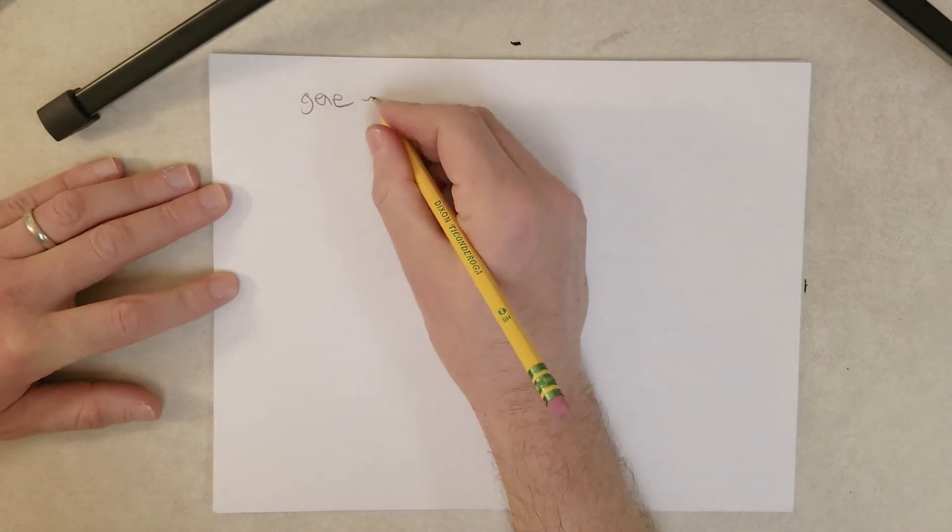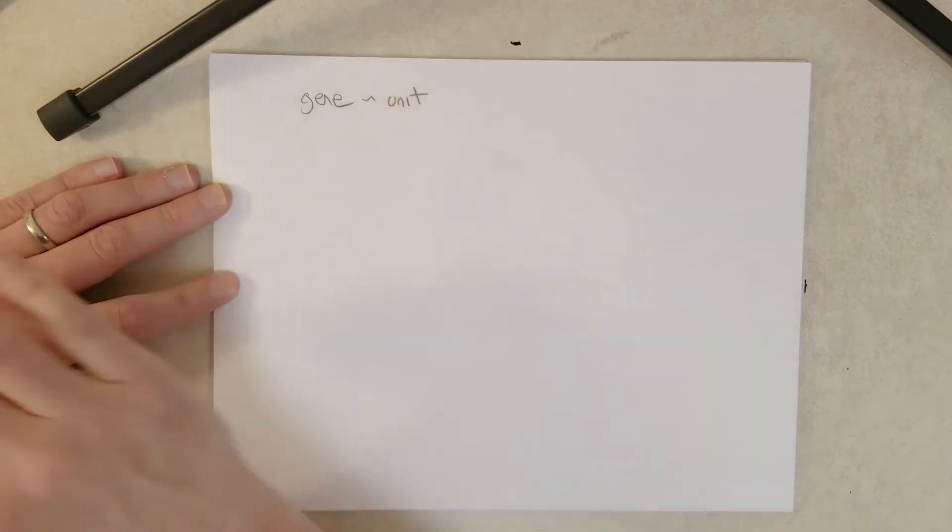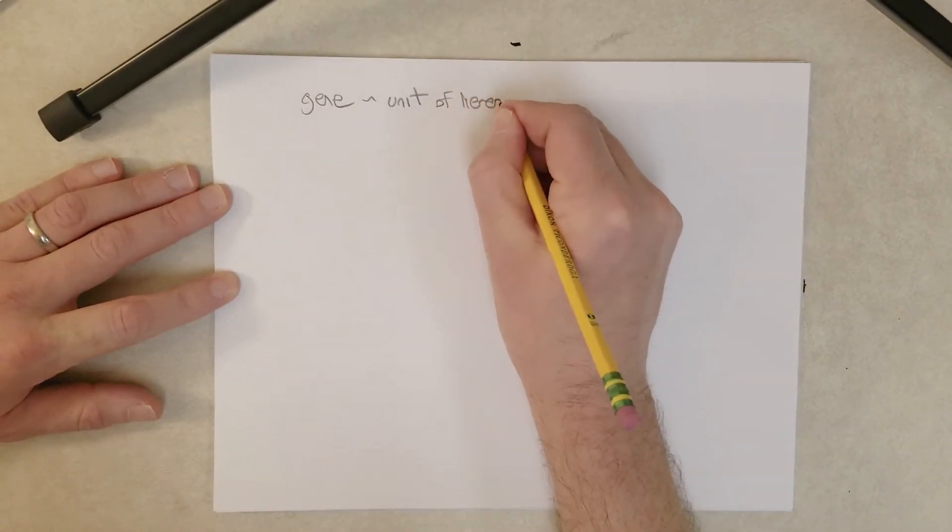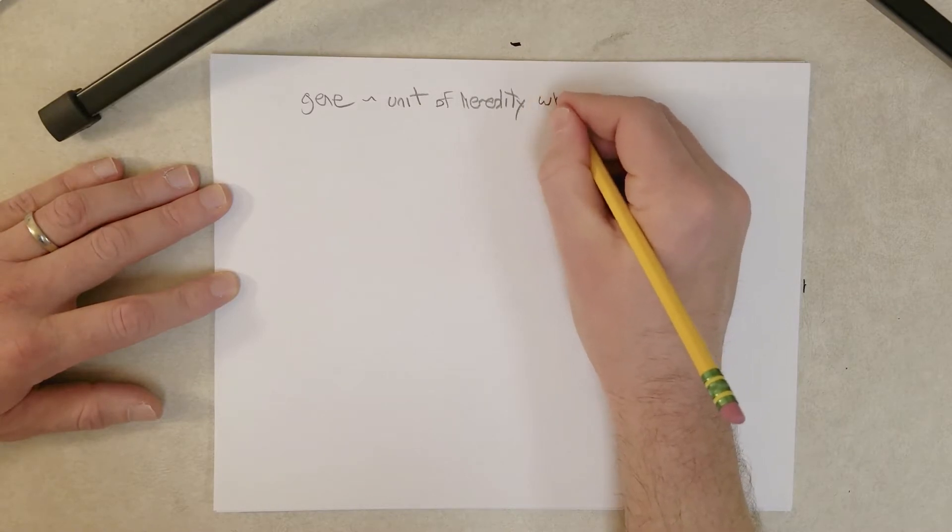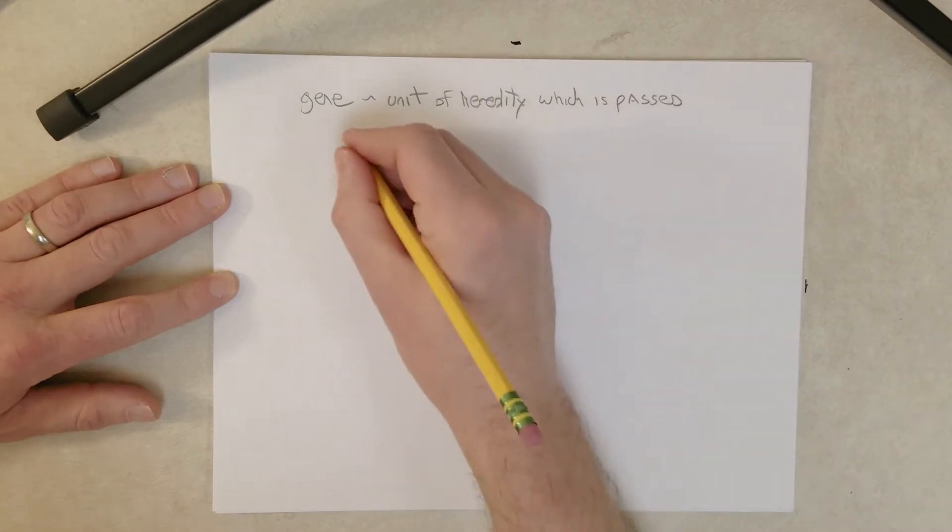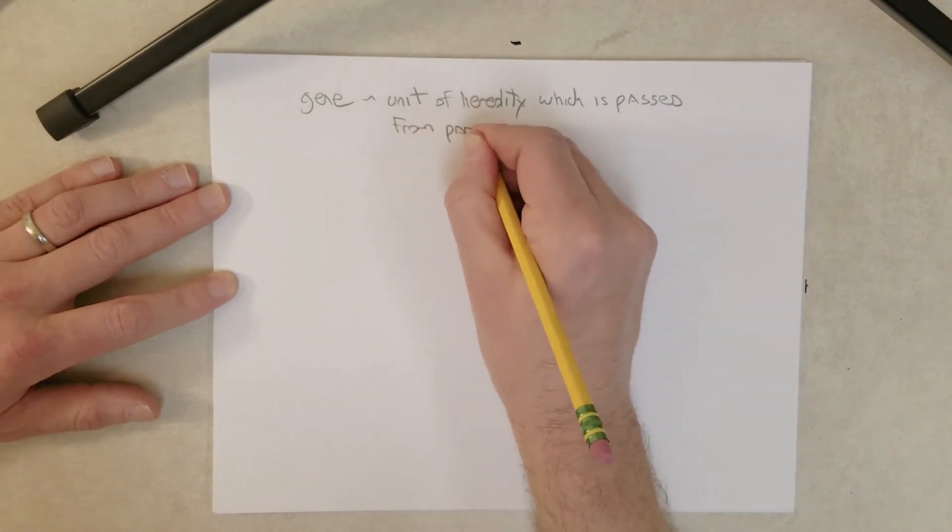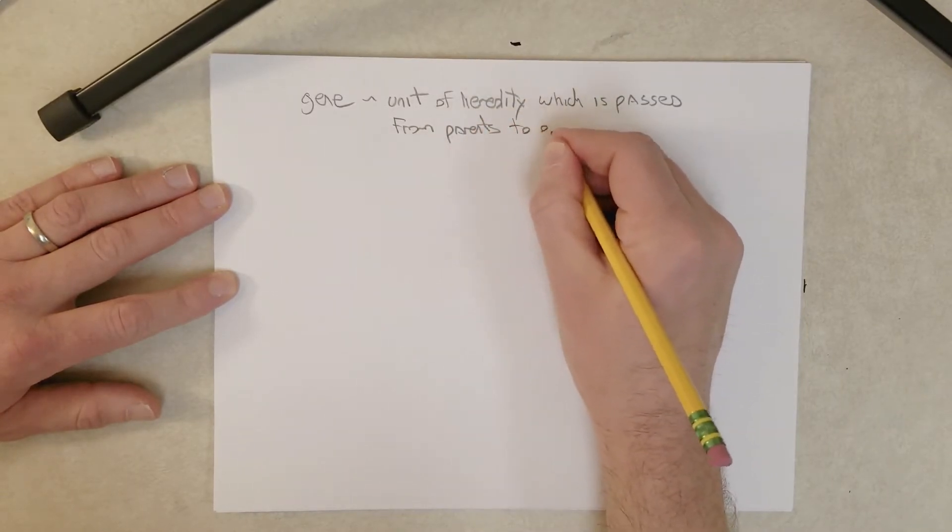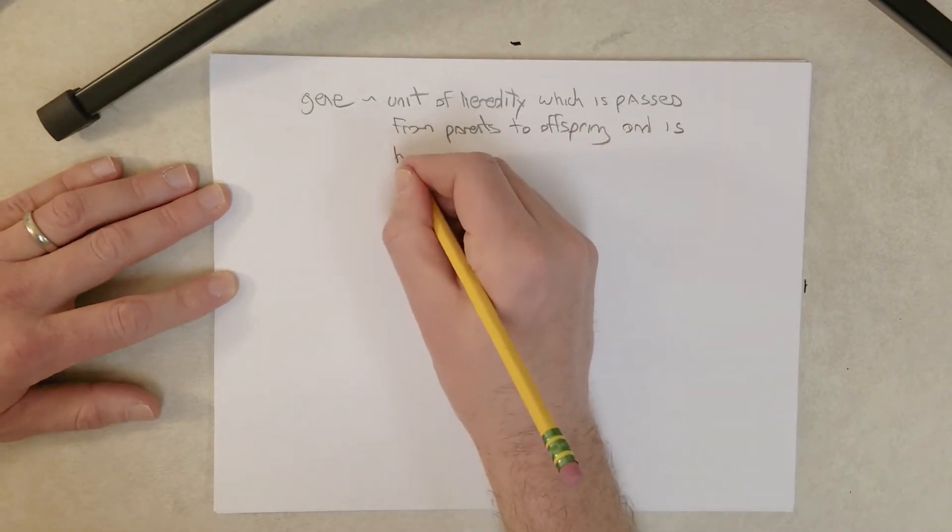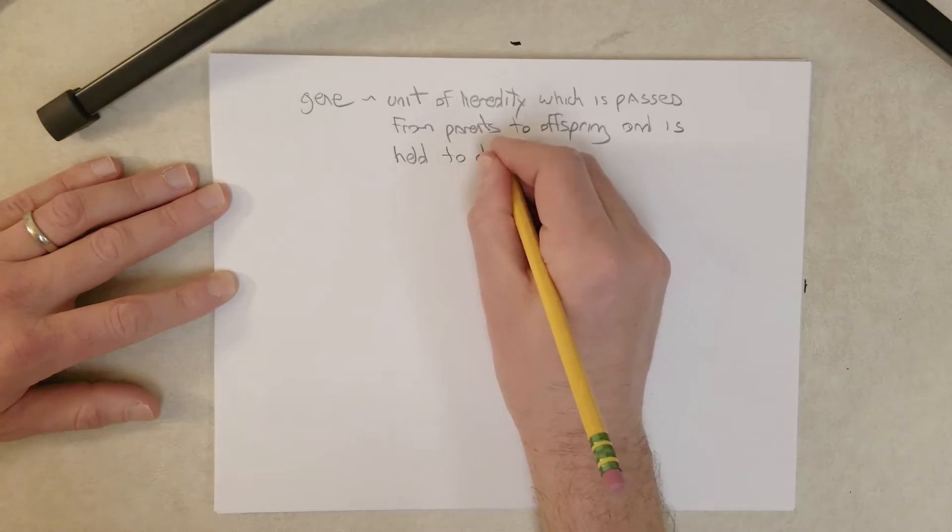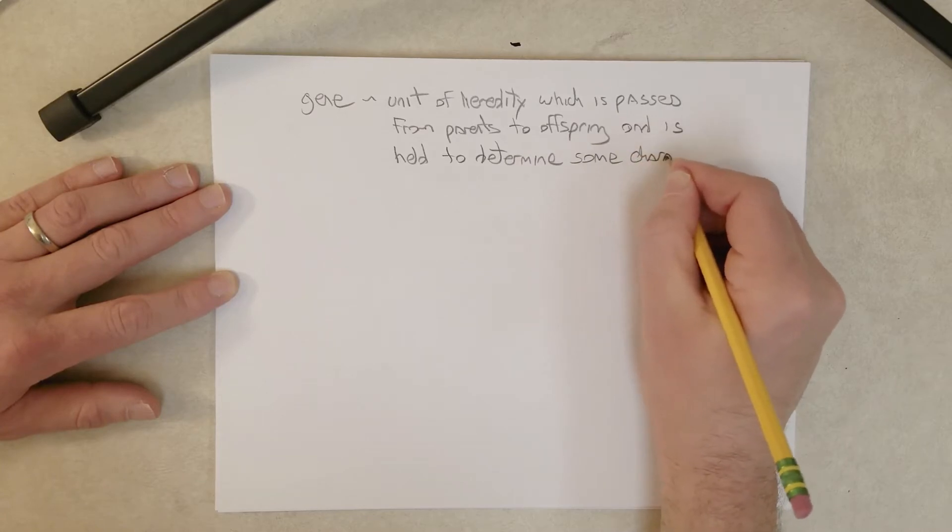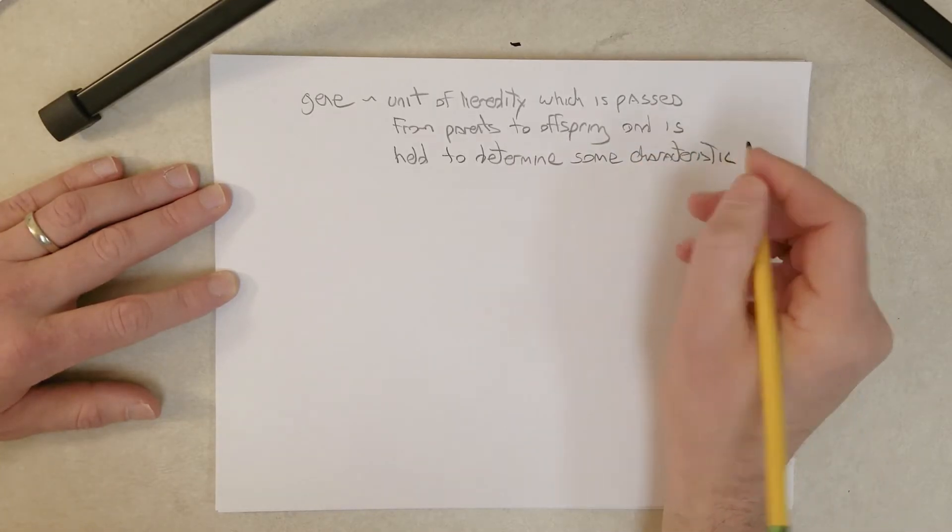So we have a gene and one definition of a gene, this is pretty good. I found this on the internet, I like this definition: unit of heredity which is passed or transferred from parents to offspring and is held to determine some characteristic of the offspring.